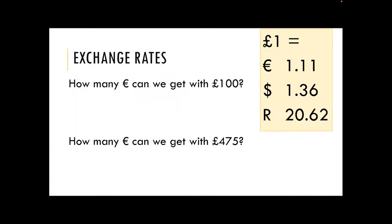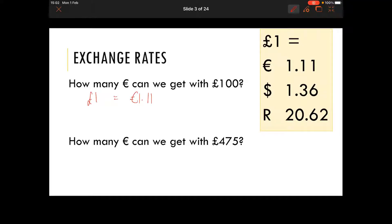Our first question is: how many euros can we get with £100? If we are starting with £100, one pound is equal to one euro and eleven cents. We are going to take our £100 and take it across to our foreign currency — we need a multiplication in our sum — and we are multiplying by the exchange rate. That gives us 110 euros for £100.